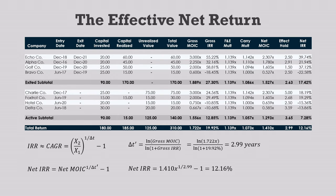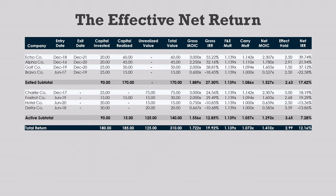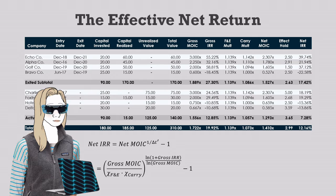I said that you can find these IRRs with a handheld calculator, so let's see how CyberStacey would do that using this formula and the numbers on the table for Echo Company. The F&E multiplier is 1 plus 25 over 180, which equals 1.139. For the carry multiplier, we can take a little shortcut: whenever a gross multiple is smaller than the fee multiplier, the carry multiplier is always 1 — we see this with BravoCo, HotelCo, and DeltaCo in the table. Otherwise, the carry multiplier is greater than 1 and we can ignore the max part of the function. So for Echo Company, the carry multiplier is 1 over 0.8 plus 0.2 times 1.139 divided by 3, which gives us 1.142.